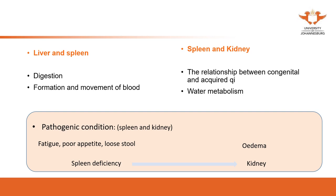In pathological changes we can see examples such as fatigue, poor appetite, and loose stool — a patient with spleen deficiency may develop into edema, which comes from the kidney problem. Conversely, an edema patient with kidney problems can after a long time develop poor appetite, affecting the spleen. These symptoms, although presented together, are seen in clinical practice, and reflect the interconnection between spleen and kidney.